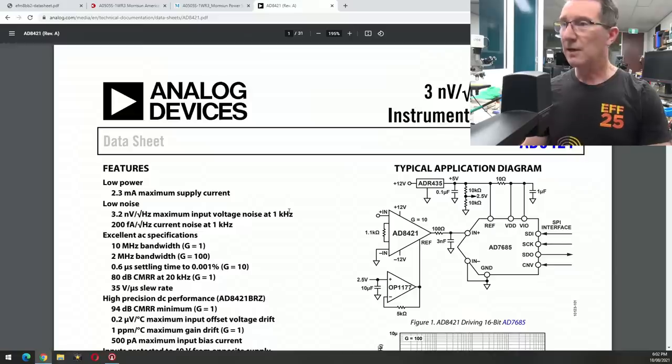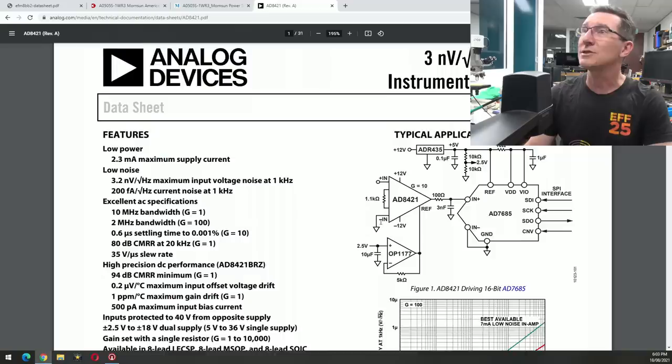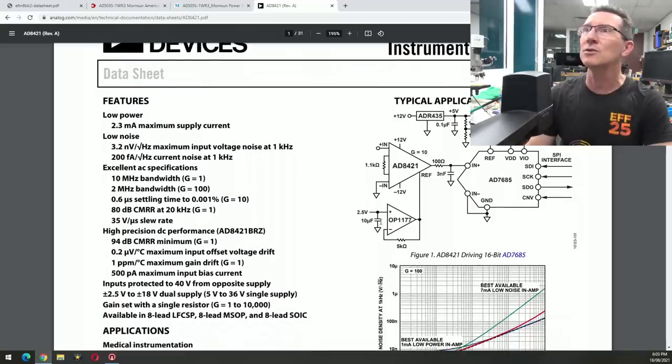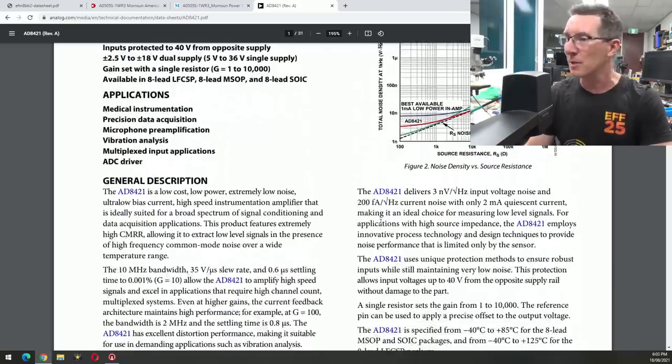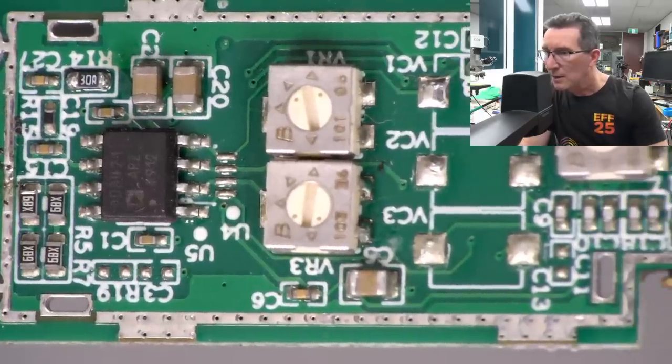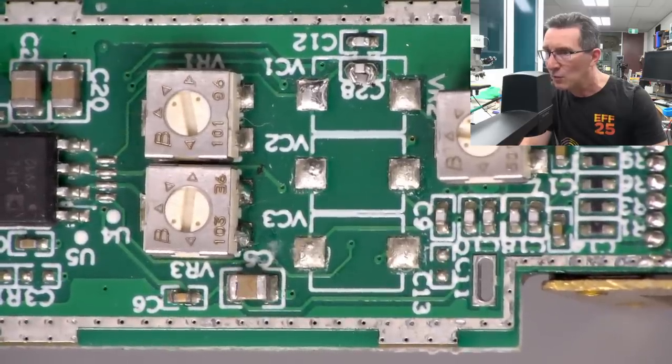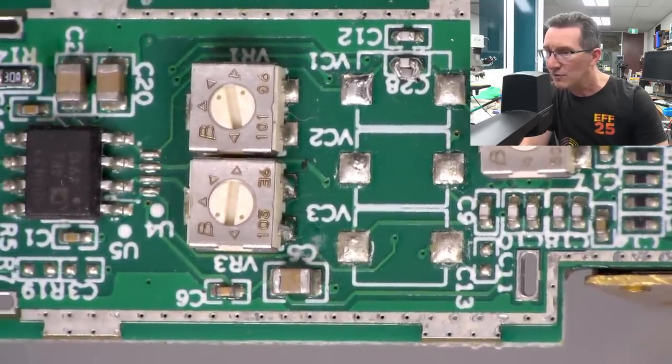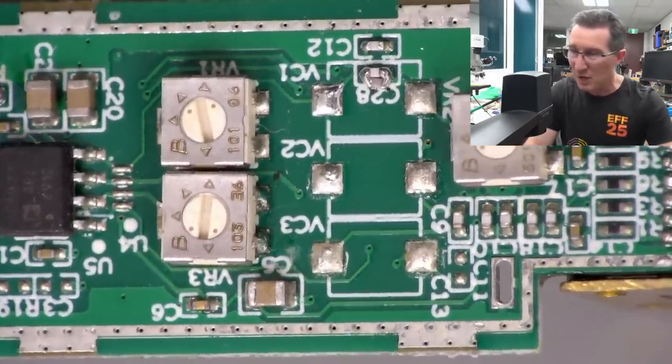AD 8421. And if we go to the videotape, that one's not too shabby. Check that out. 3 nanovolts per root hertz low power instrumentation amp. There you go. That's exactly what you'd expect in there. That's 200 femto amps current noise, 10 meg bandwidth, 2 meg bandwidth, a gain of 100. Yep, so that's exactly what you'd expect inside the head of something like this. So that's about all she wrote, isn't there? There's more footprints for variable caps. That's what VC stands for there. So that's interesting. Why they haven't put the variable caps in? That was maybe only during development and they went, nah, she'll be right. No wuckers. Don't need them.